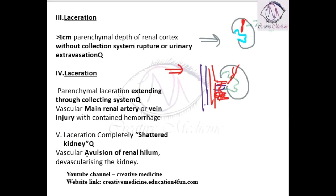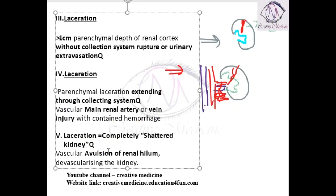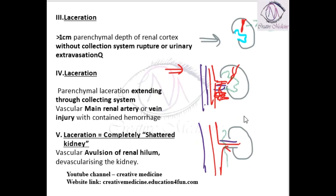Then we have Grade 5. In Grade 5 we have a completely shattered kidney. The laceration is at the renal hilum — there is avulsion of the renal hilum — and as a result the whole kidney is devascularized. So this is Grade 5.